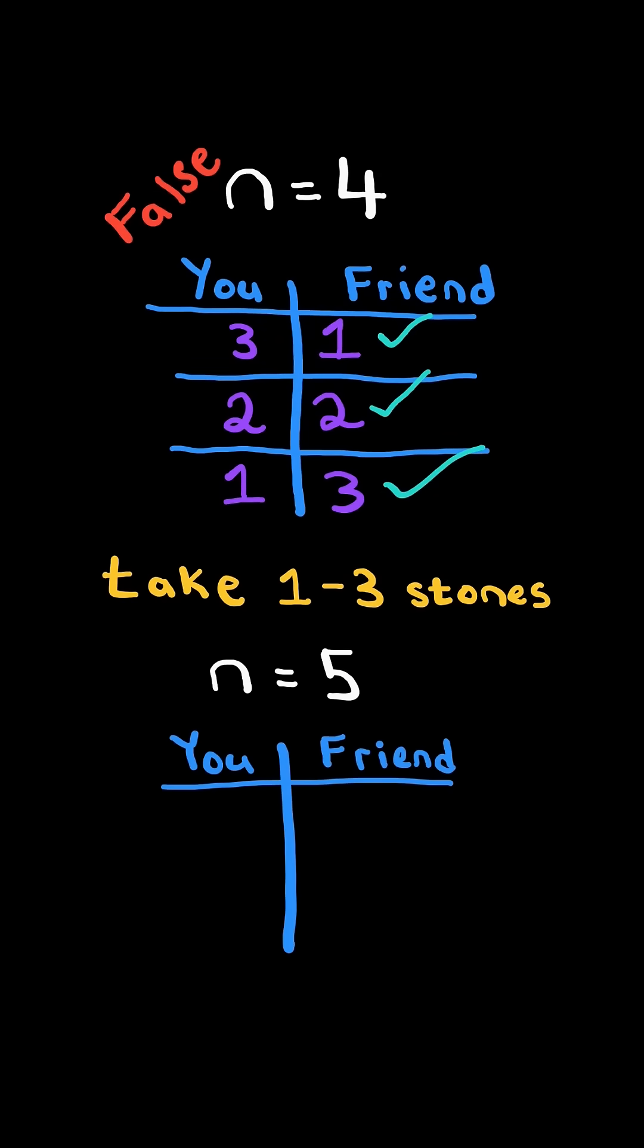Consider N equals 5. We could take 1, and whatever our friend chooses, we can choose the remaining and win since we have a max of 3.